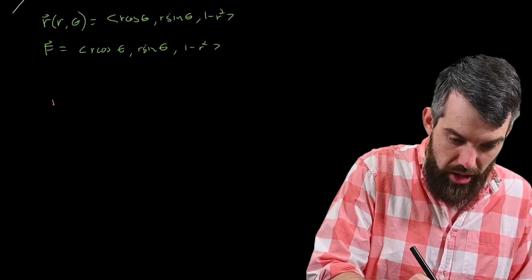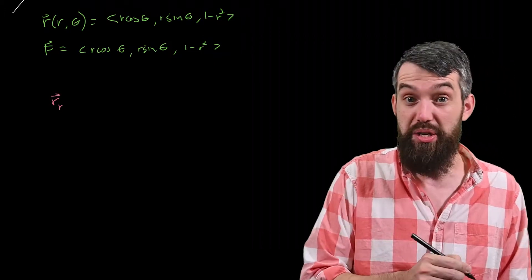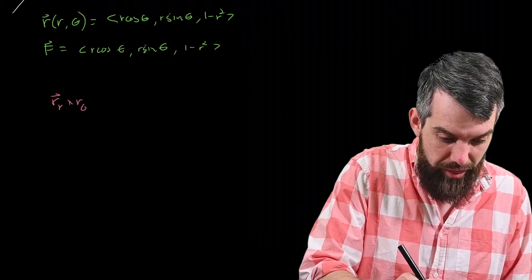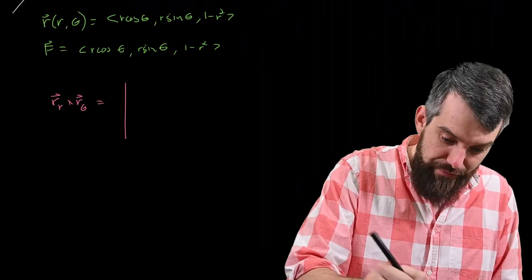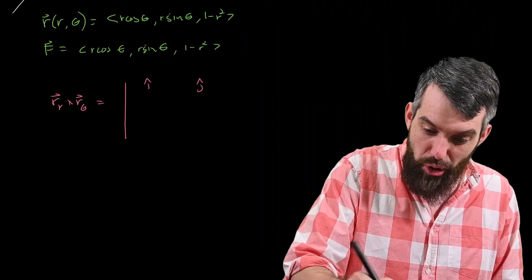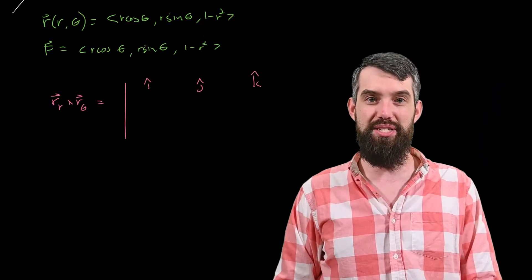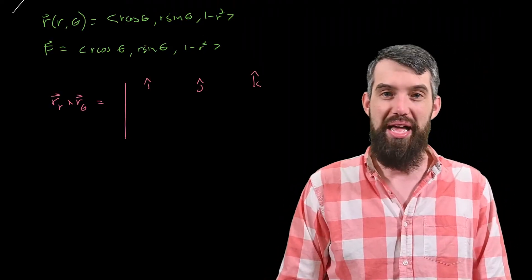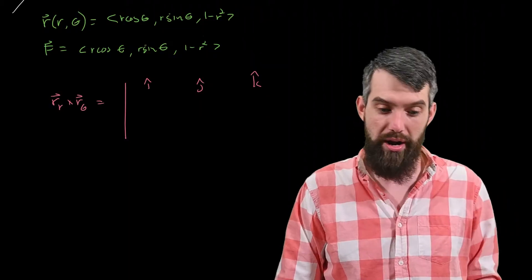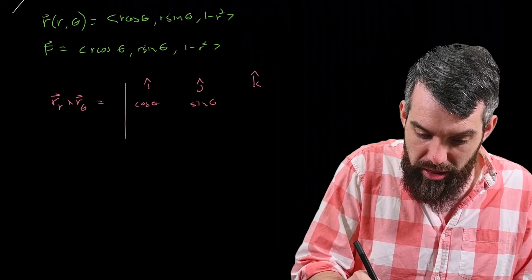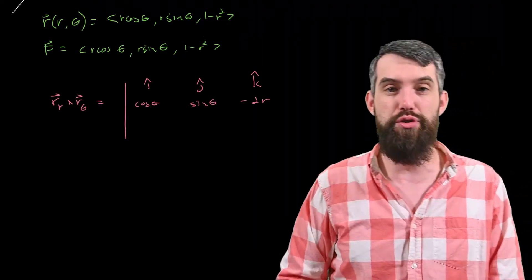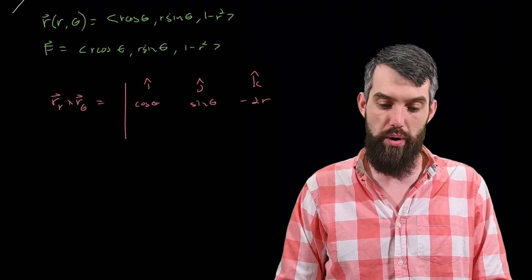So now I want to compute out r_r, the partial with respect to r, crossed r_theta, the partial with respect to theta. This is defined to be a determinant of this sort of funky matrix here, and I had to do some partials in my head. So the second row is the partial with respect to r. That's going to be cos theta, sine theta, and minus 2r, the derivative of 1 minus r squared is minus 2r.